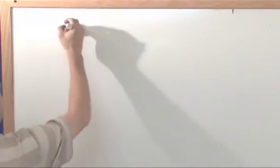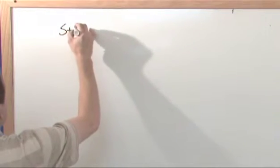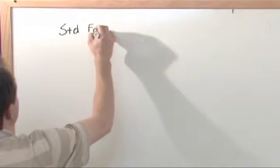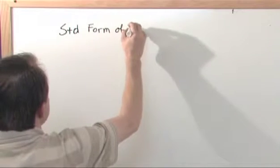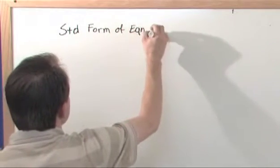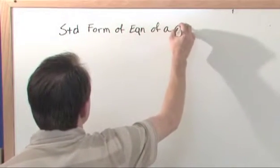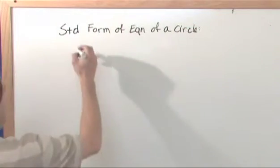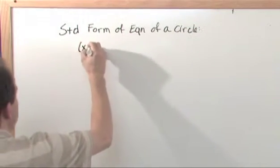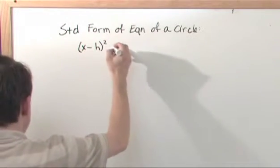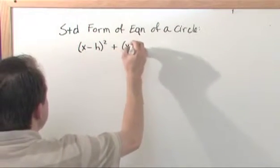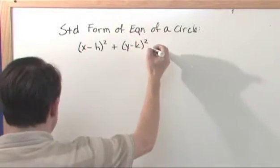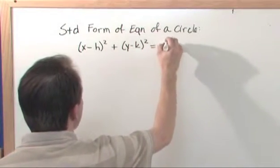So let me write down what the standard form of the equation of a circle is. The standard form of the equation of a circle. I'm going to write this, and it looks like this: x minus h squared plus y minus k squared is equal to r squared.